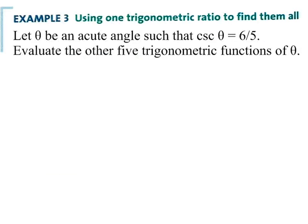All right, so let's go to the type of example that you're going to see on the assignments. You'll be asked to use one trig ratio to find them all. So in this case, let theta be an acute angle such that cosecant of theta equals 6 over 5,